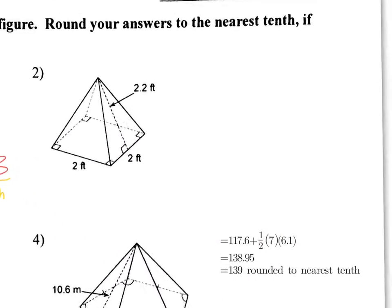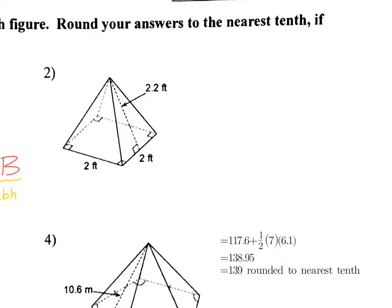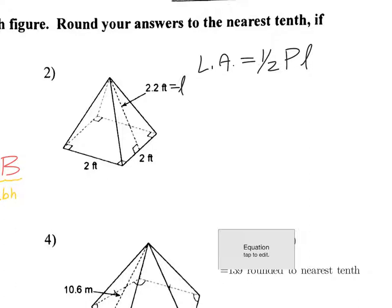So we're using the same formula. So the first thing I'm going to do is lateral area. So lateral area is 1/2 PL. Here's my L. There's my slant height, the perimeter. So I've got, I'll do blue here, 2, 2, 2, 2. So my perimeter here, right underneath, is 2 times 4, which is 8. So my lateral area is 1/2 times 8 times 2.2. So times 8 times 2.2. And that gives me 8.8.